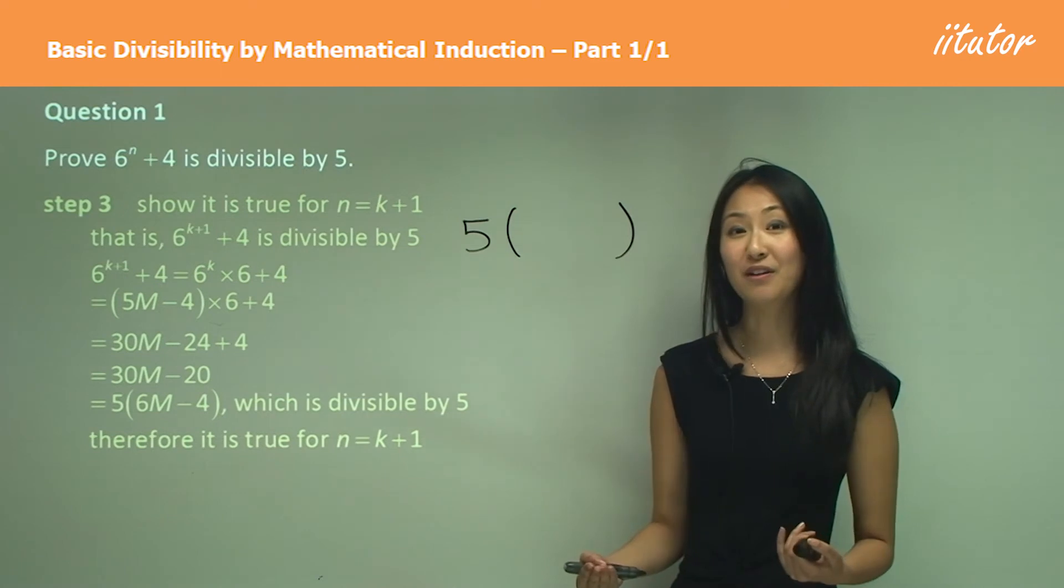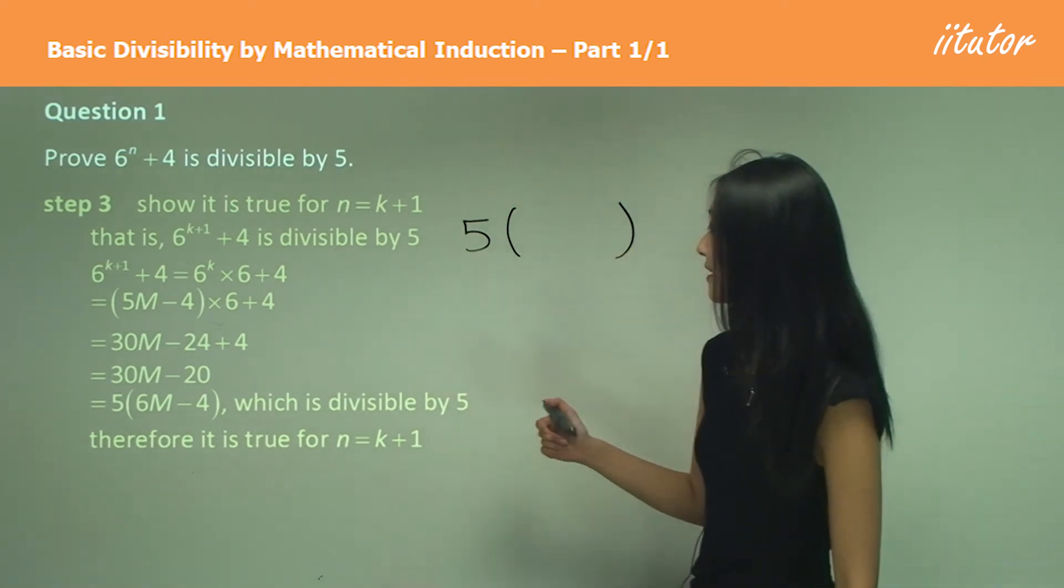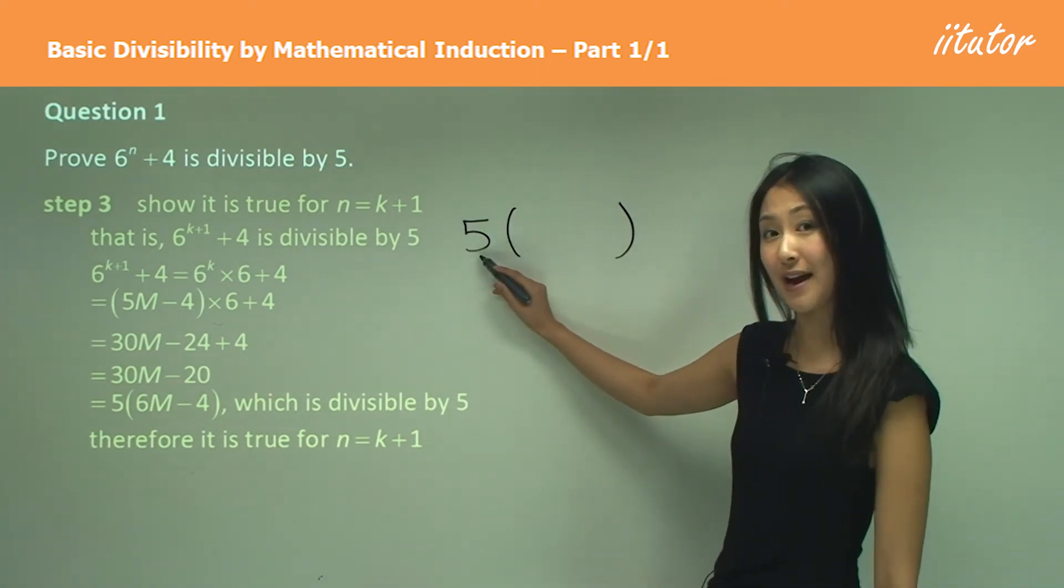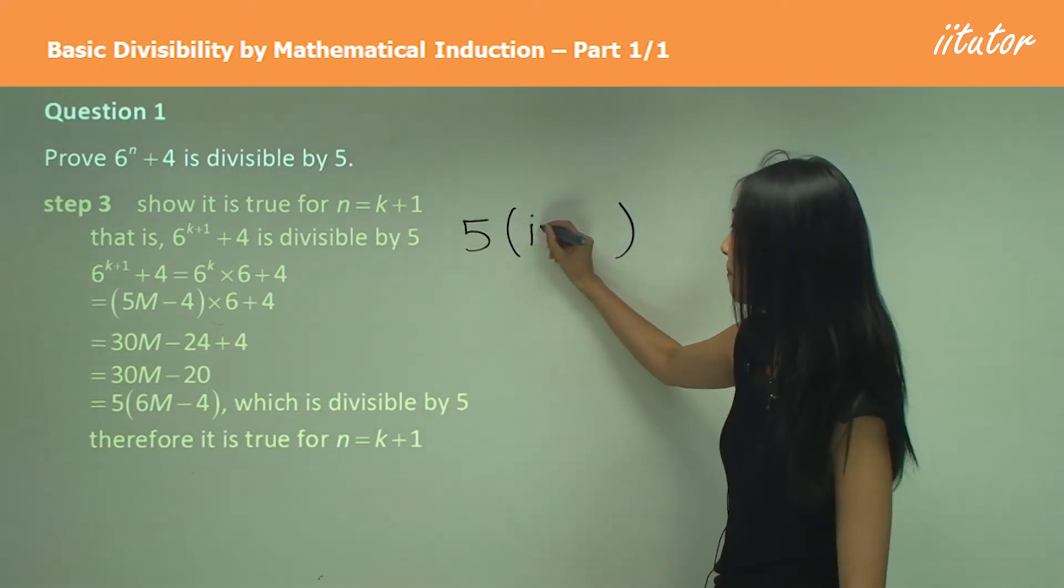Now before we go on to the conclusion, I want to make a point here. Now can you see that to show something is divisible by 5, I have to be able to factorize out 5. But the other thing is what's in the bracket must be an integer.